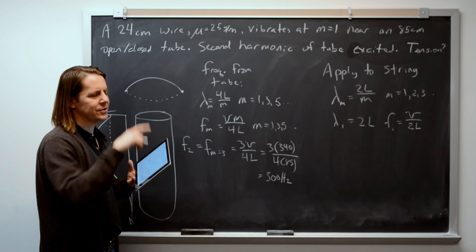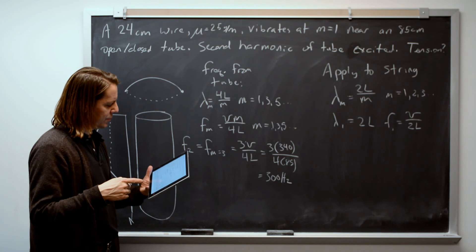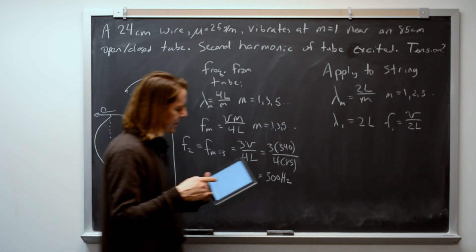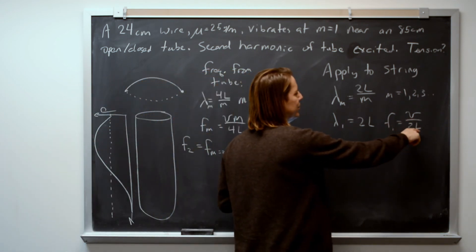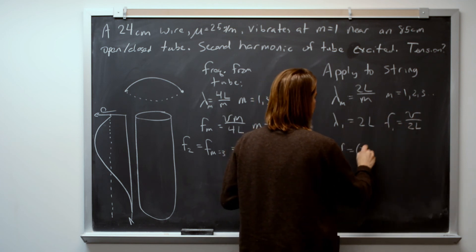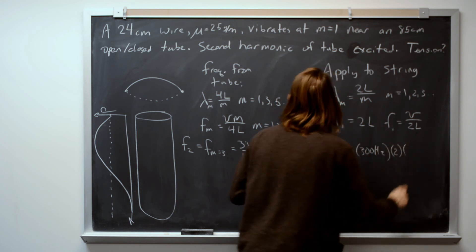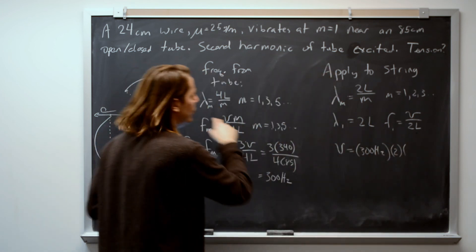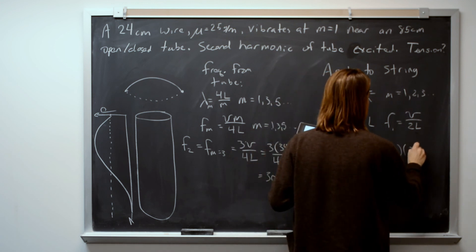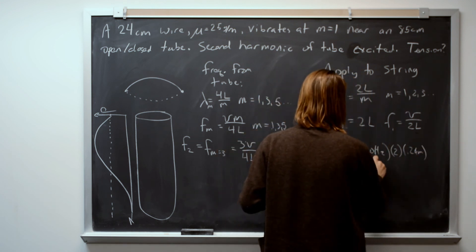The velocity is the square root of tension over mass density. So I think the best way to go here is to solve this for V and then set that equal to square root of T over mu. So V equals F is 300 hertz times 2, times the length of the string was 0.24 meters. So for V, I get 144 meters per second.